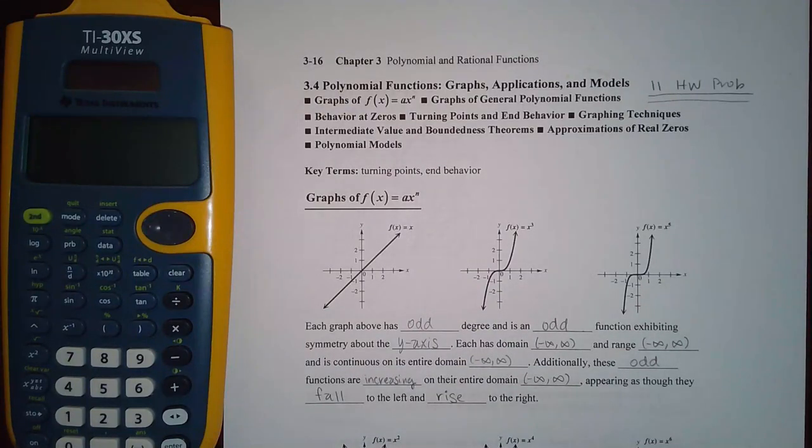Okay, here we have 3.4. So now that we have quadratics out of the way, we can go to higher exponents and get into what are called polynomial functions.